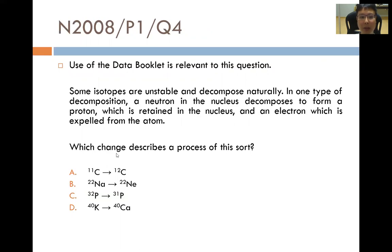In order to begin answering this question, we first have to understand what the question is asking and what's happening in the process. Basically, a neutron decomposes to form a proton as well as an electron. If we were to write it in the form of a chemical equation, the neutron turns into a proton and an electron. So what we would like to know is what happens to the proton number and the nuclear number as this change happens.